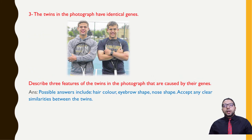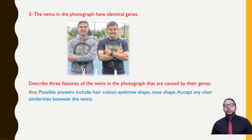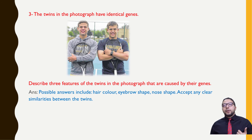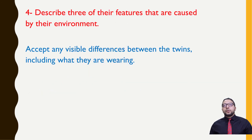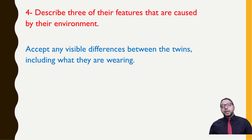Third question: there's a picture of identical twins. Describe three features caused by their genes — you can include any similarities in their bodies, like hair color, eyebrow shape, or nose shape; any visible feature will be accepted. Fourth question: describe three features caused by the environment. You might mention any differences, like their T-shirts or any difference based on the environment — these will be accepted.